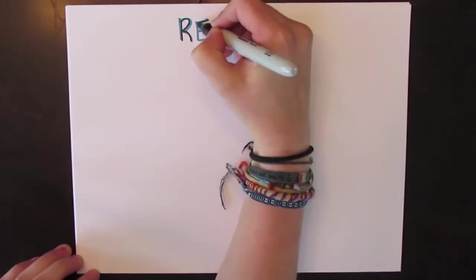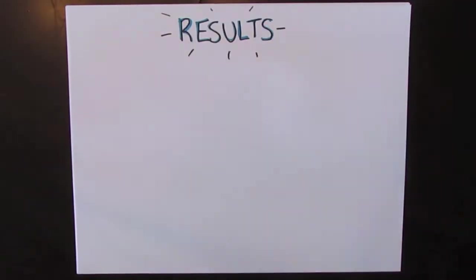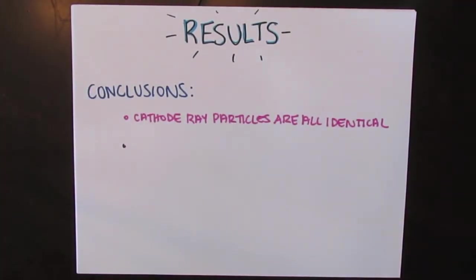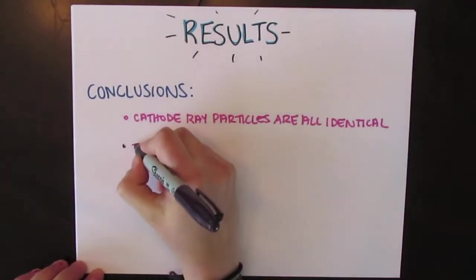From the results obtained, Thomson concluded the following. First, cathode ray particles are all identical.